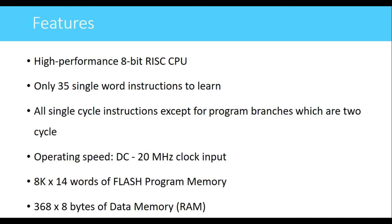It has 8K x 14 bits of flash program memory, meaning there are 8K memory locations and each location stores 14 bits. It also has 368 x 8 bytes of data RAM, with 368 RAM locations each storing 8 bits. The RAM is used for temporary storage, while the flash program memory is used for storing the program or code.